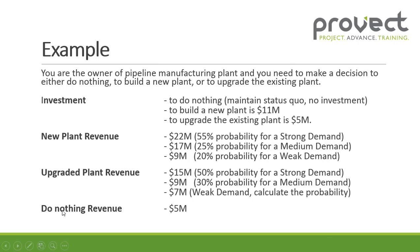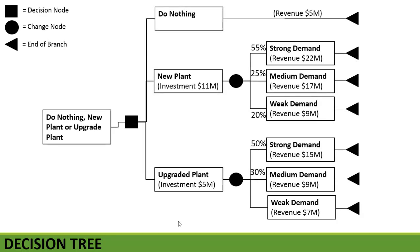For doing nothing you will have a revenue of 5 million. Now let's build and prepare the decision tree. We've got our decision node where we need to make a decision: are we going to do nothing, build a new plant, or upgrade the plant? Do nothing gives a revenue of 5 million dollars. A new plant requires an investment of 11 million, or to upgrade the plant an investment of 5 million. We then move into our chance node.